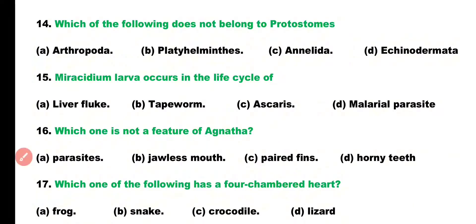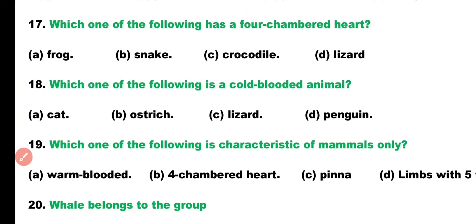Question number 17. Which of the following animals has a four-chambered heart? Frog, Snake, Crocodile, or Lizard? Correct answer is Option C. Crocodile is a reptile and exceptionally it has a four-chambered heart present, like mammals.